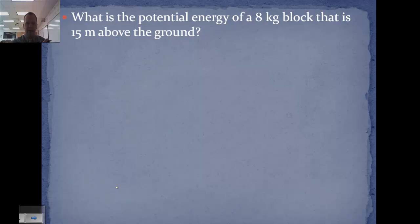So let's look at some example problems. Here's a very straightforward one: what is potential energy of an 8 kilogram block that is 15 meters above the ground? Gravitational potential energy equals mgh. Potential energy here equals 8 times 9.81 times 15, comes out to 1,177 joules.